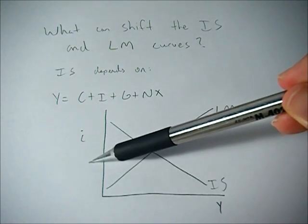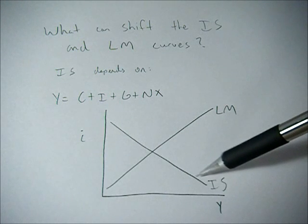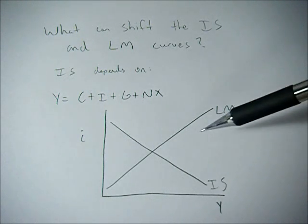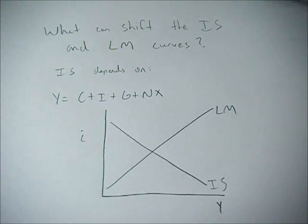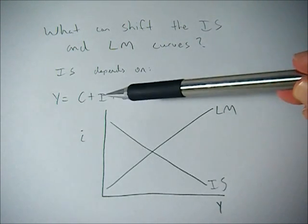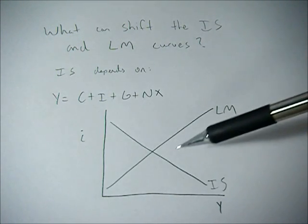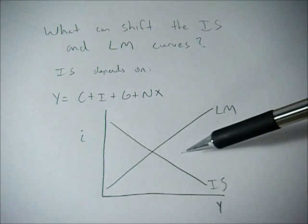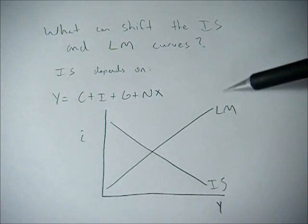If the interest rate goes down, GDP needs to go up in order to keep investment and savings in equilibrium. But if any of these guys change, then we're going to see a shift in this IS curve to compensate for that change.